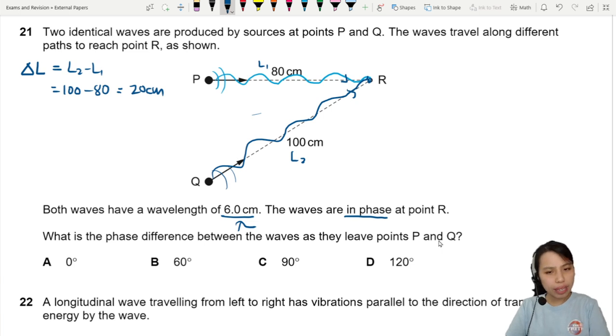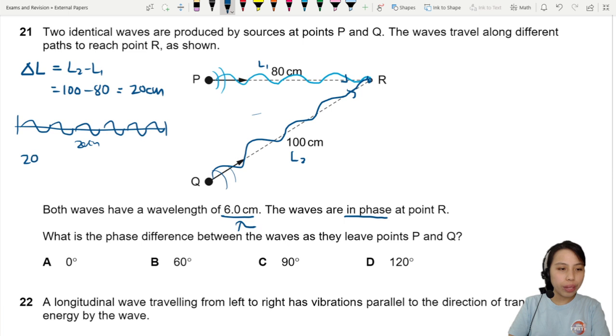But in terms of wavelength, how many wavelengths is 20 cm? You imagine this path is 20 cm. How many lambdas can you fit inside there? That's basically what we're trying to find. So what you can do is just take 20 divided by 6, and you would get an incomplete number.